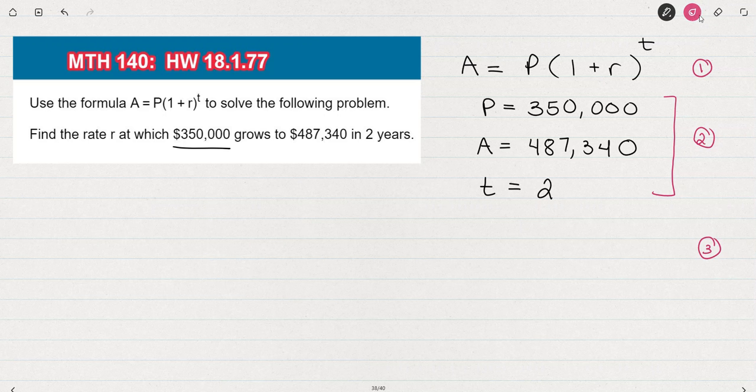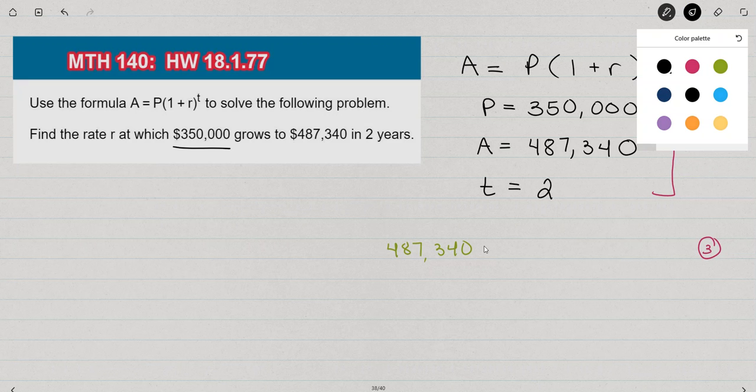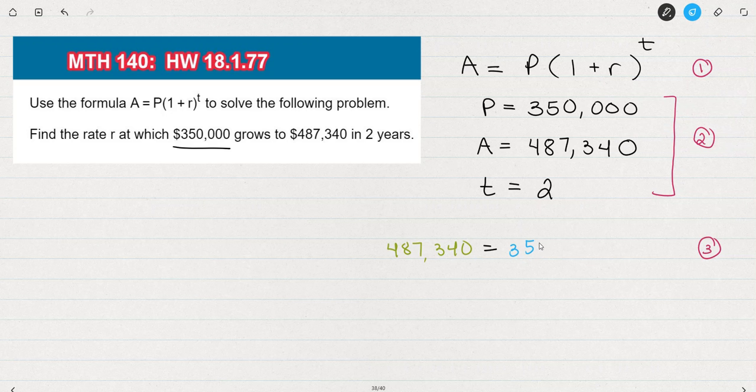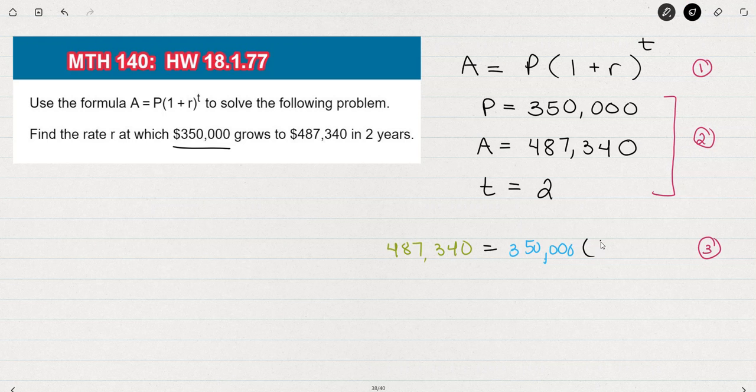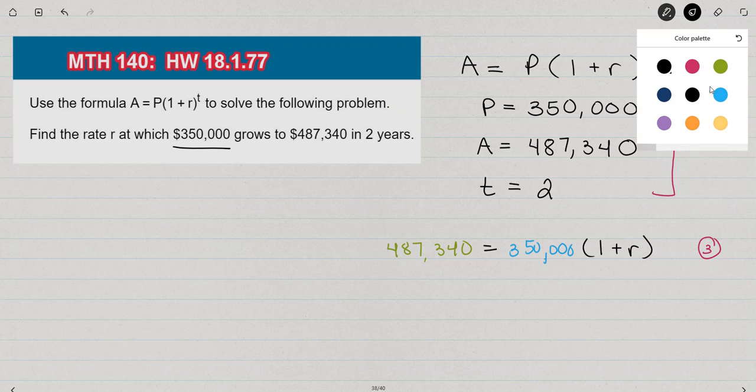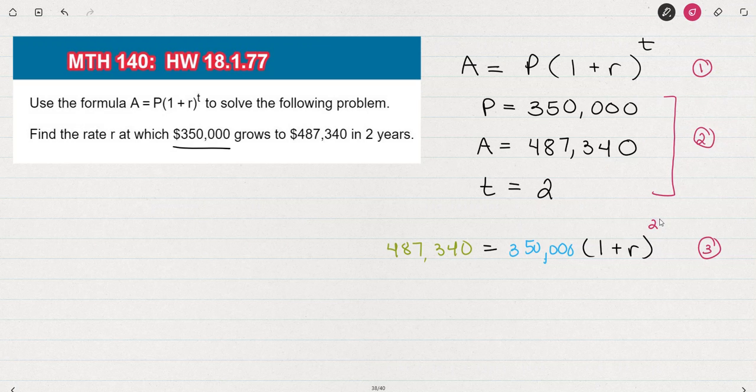So in place of A, I'm going to put $487,340. In place of P, I'm going to put $350,000. In place of T, because I'm solving for R, in place of T, I'm going to put 2.